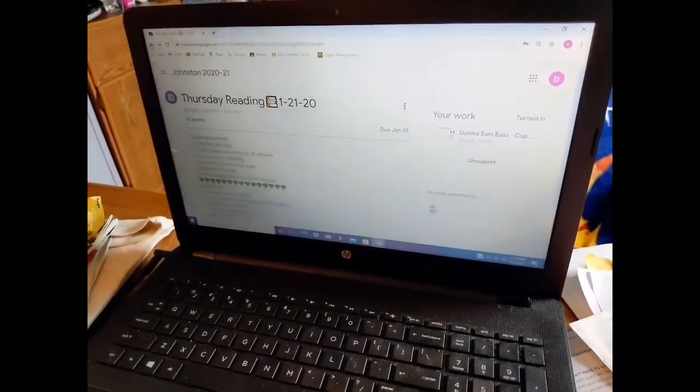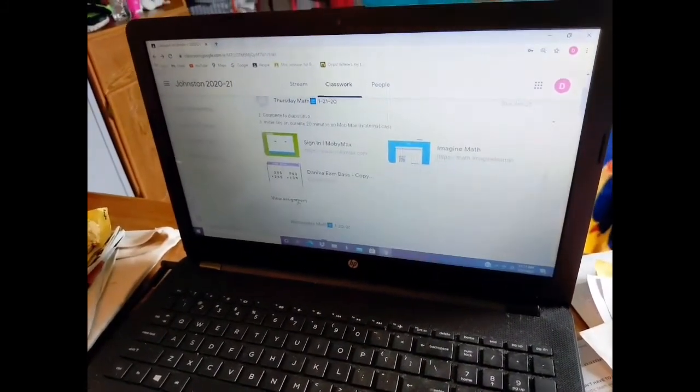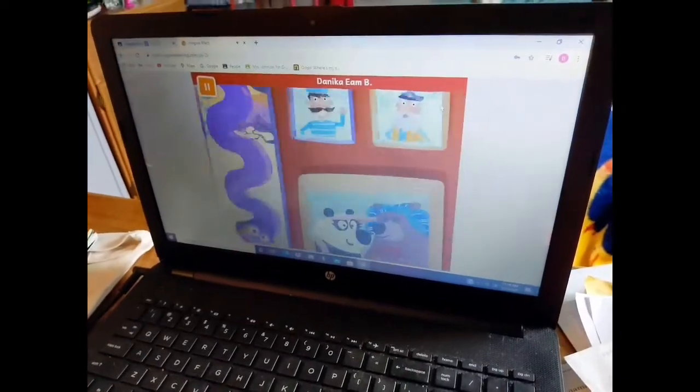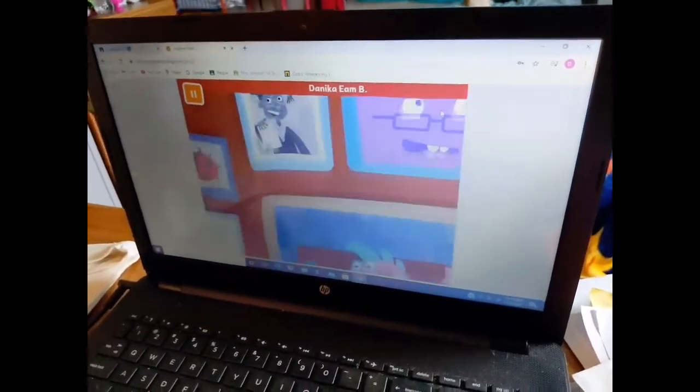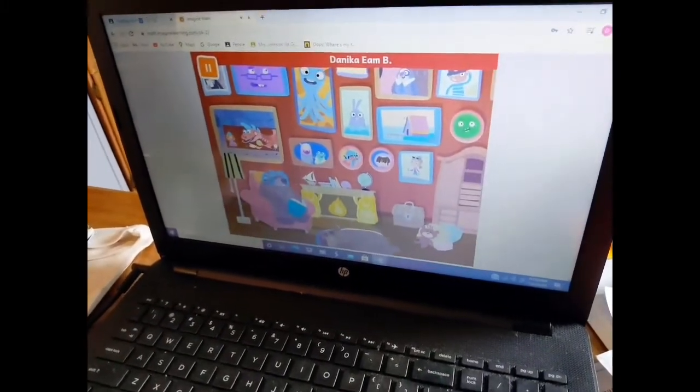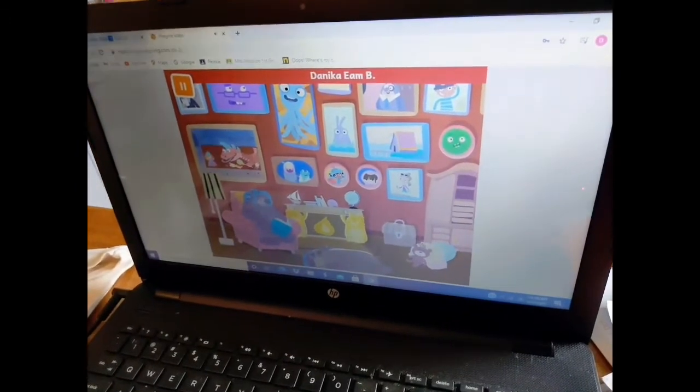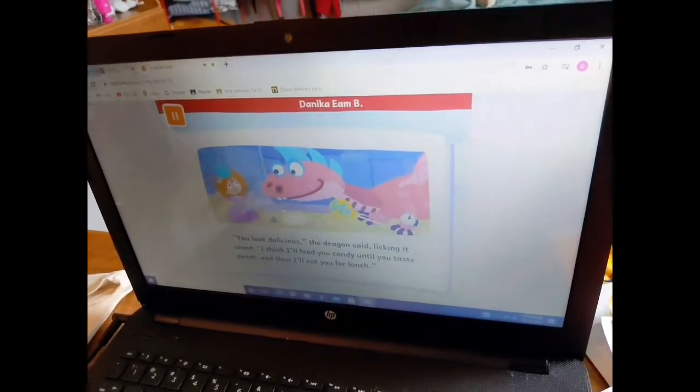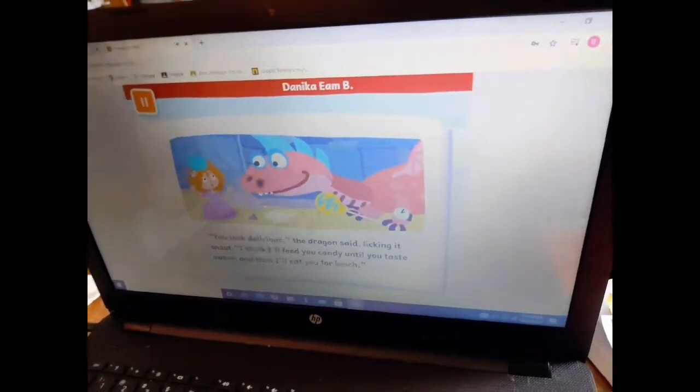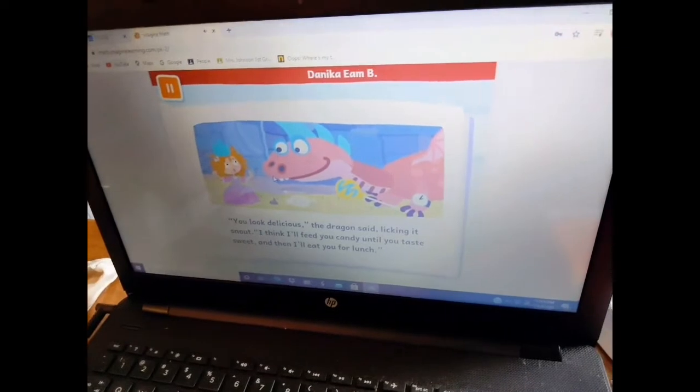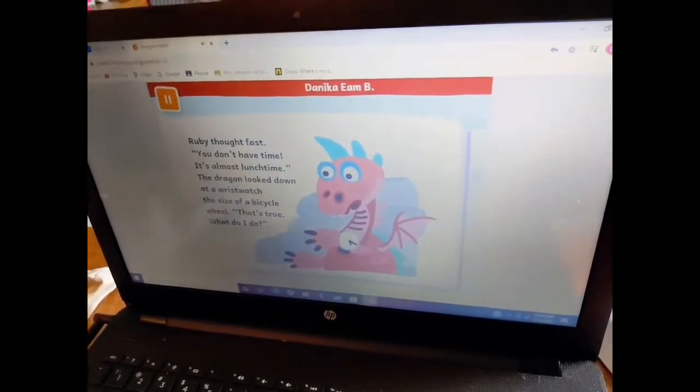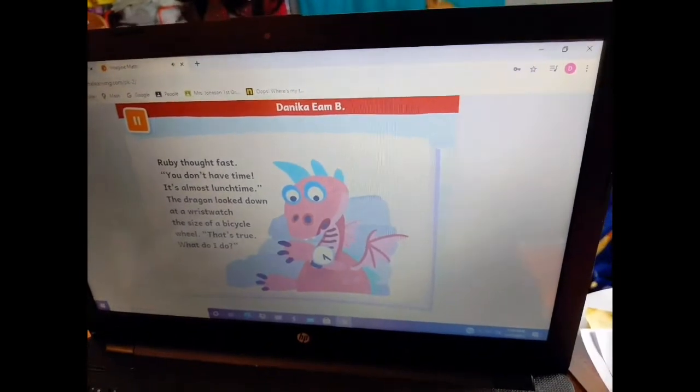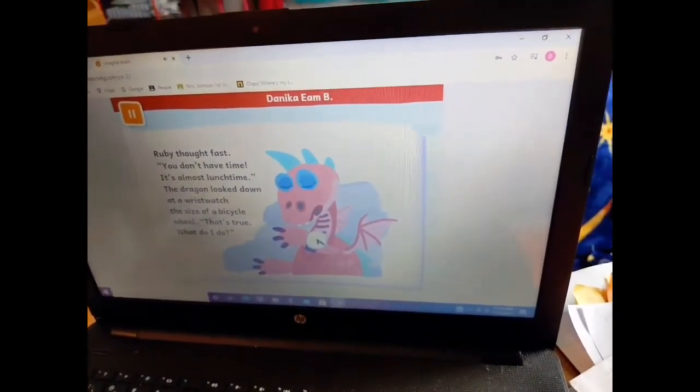So I did math first. Let's do the math one first. Little math or magic math. What's this? Oh, I know this. It's story time now. Is this the story? It's almost lunch time. Dragon look down on a wristwatch the size of the spice box. That's fun.